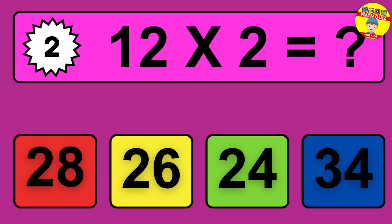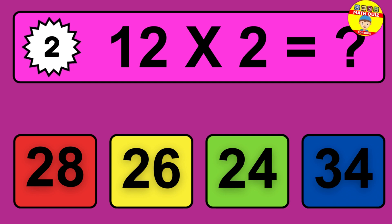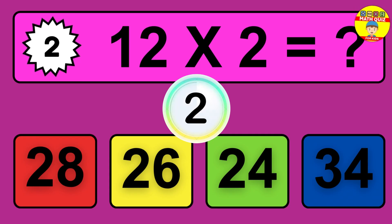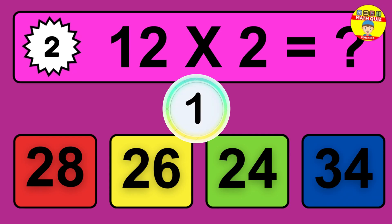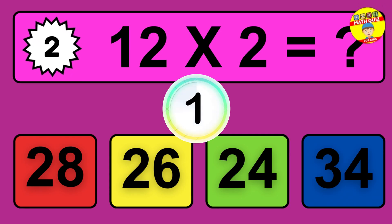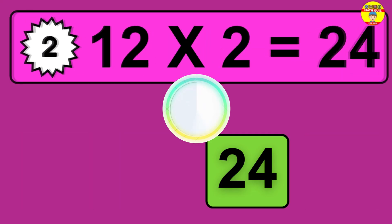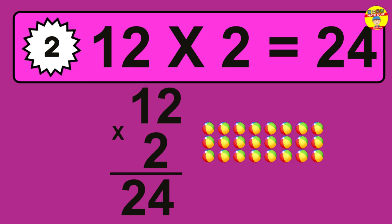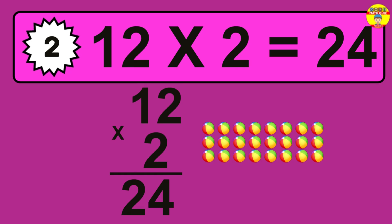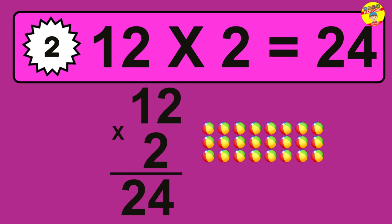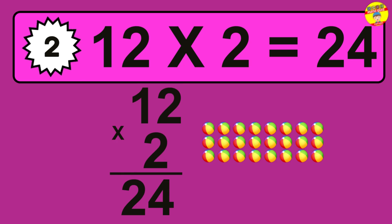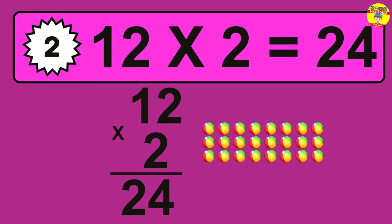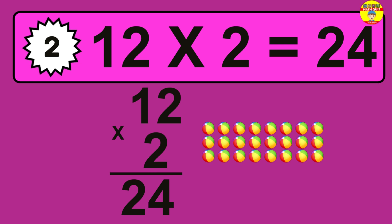Question two: 12 times 2 equals what? The answer is 12 times 2 is 24. To calculate, we have 12 groups with 2 balls each. So how many balls do we have? 24 balls.